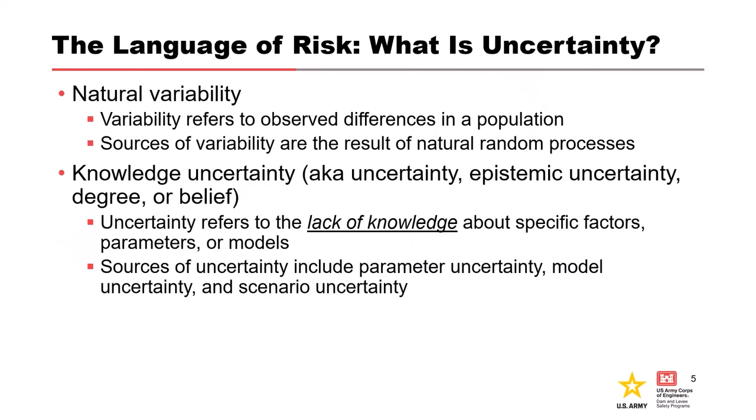There are two primary components of randomness in flood exceedance probabilities: natural variability and knowledge uncertainty. Natural variability, or aleatoric uncertainty, refers to observed differences in our population — sources result from natural random processes, and floods occur randomly in a way that cannot be fully predicted. Knowledge uncertainty, or epistemic uncertainty, refers to the lack of knowledge about a specific factor, parameter, or model. Sources include parameter uncertainty, model uncertainty, and scenario uncertainty.